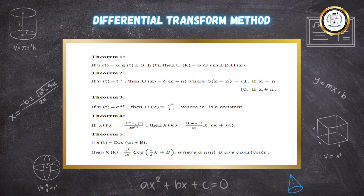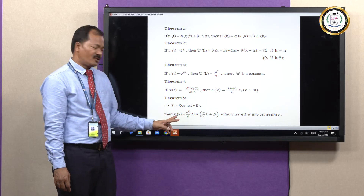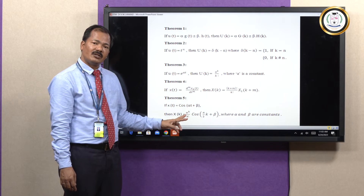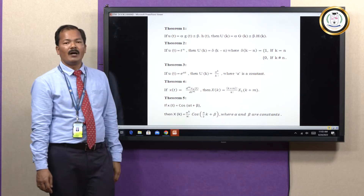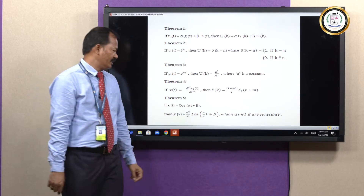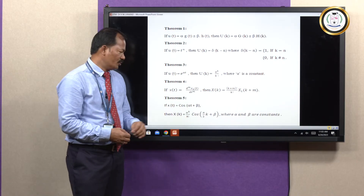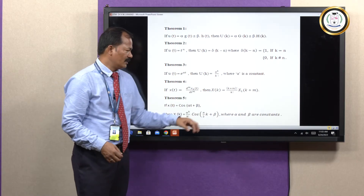Theorem 5 deals with trigonometric functions: if x of t equals x1 of t equals cosine of (alpha t plus beta), where alpha and beta are constants, then the transformed capital X of k equals alpha to the power k upon k factorial, times cosine of (pi k upon 2 plus beta).